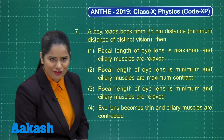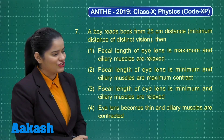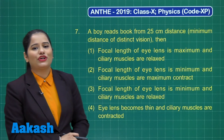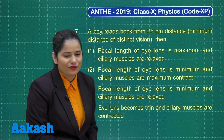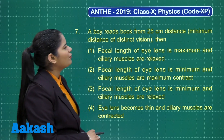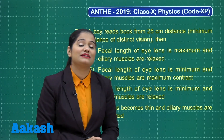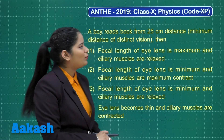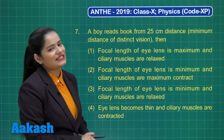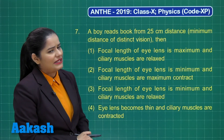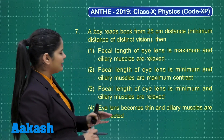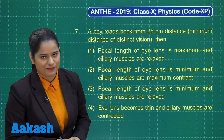Here is question number 7 for our discussion, which belongs to the chapter Human Eye and the Colorful World. This says: a boy reads a book from 25 centimeter distance, which is the minimum distance of distinct vision. We need to find out the correct option among the given options.